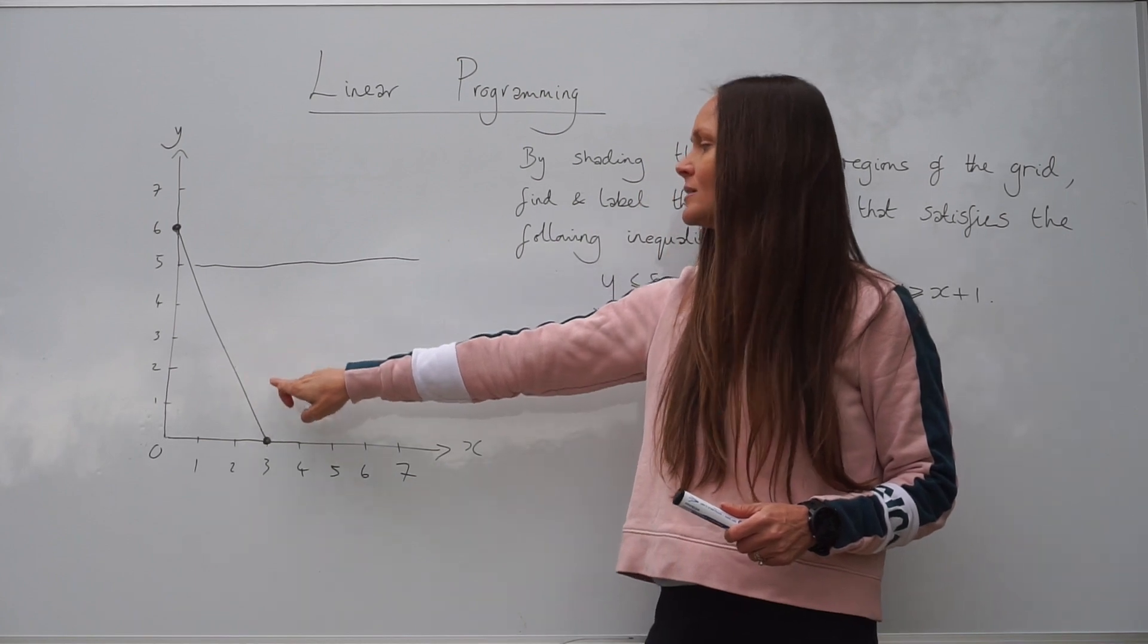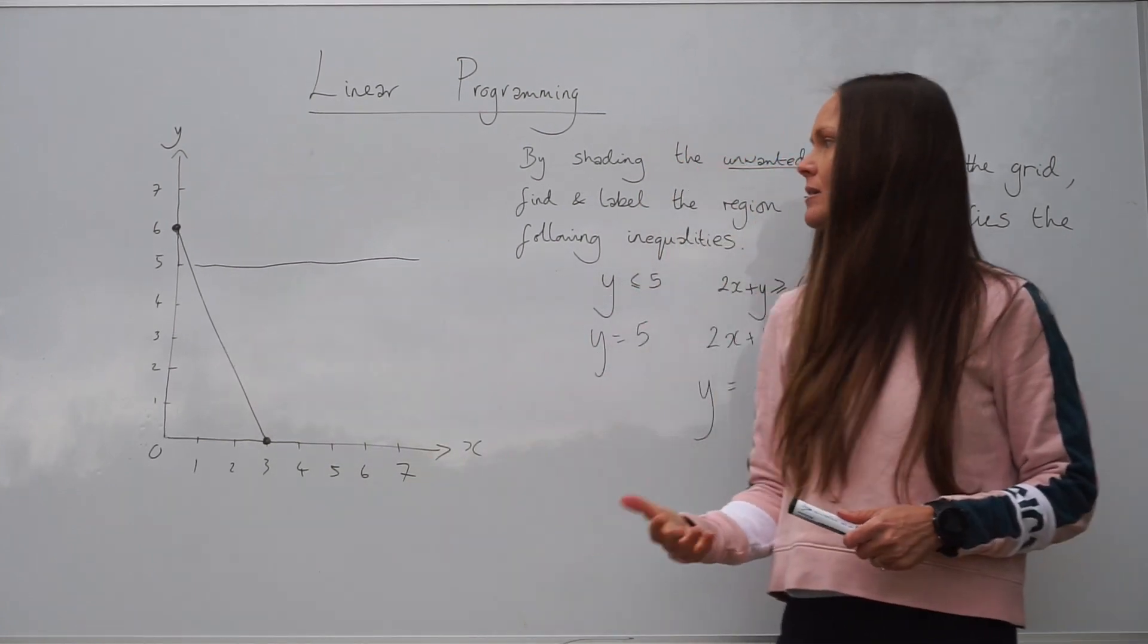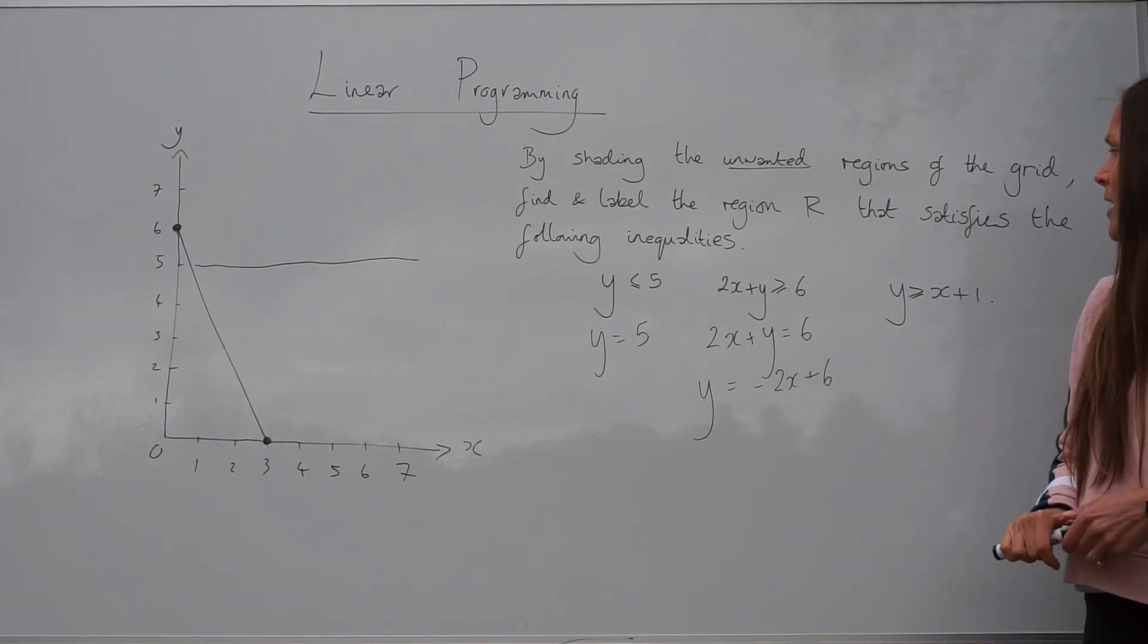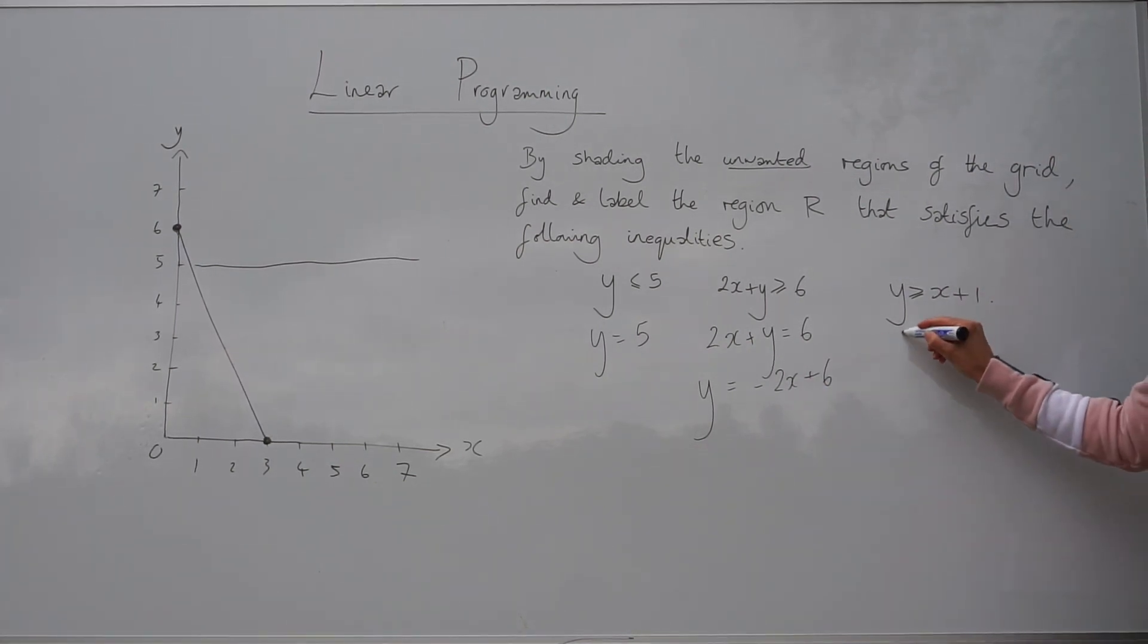So that's the gradient negative 2. So we don't need to draw that line on our grid. For the last one, we need to draw y equals x plus 1.